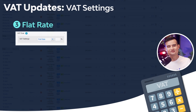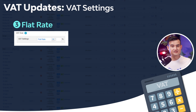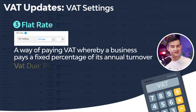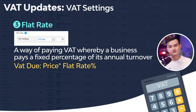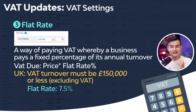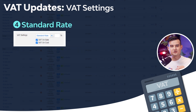The third setting is flat rate. The VAT flat rate scheme is a way of paying VAT whereby a business pays a fixed percentage of annual turnover. The formula is: price times the flat rate percent. Take the UK for example — to join the flat rate scheme, customers' VAT turnover must be £150,000 or less excluding VAT, and the flat rate is 7.5%.